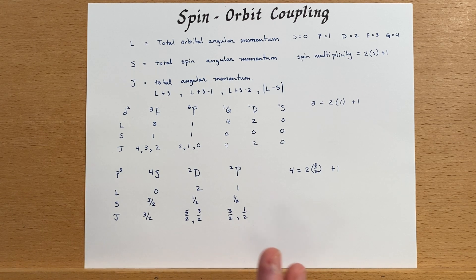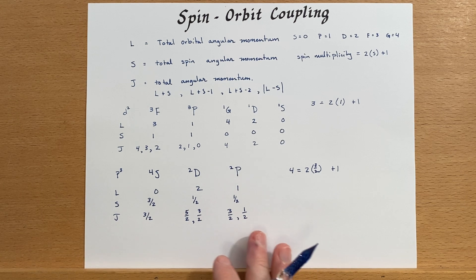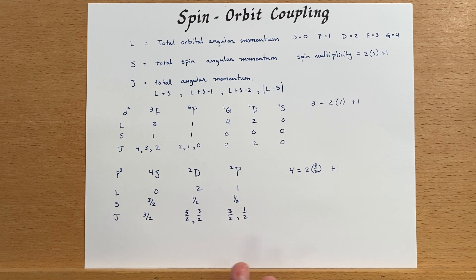So this is spin-orbit coupling and how to determine the J values given the free ion terms.